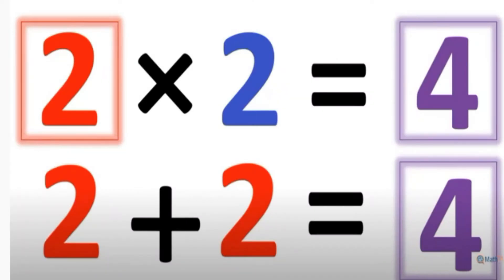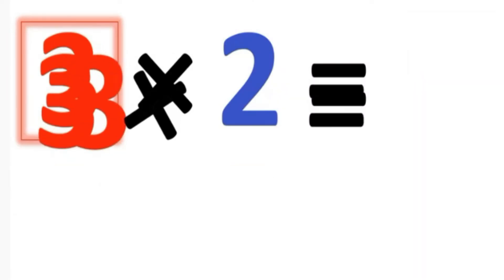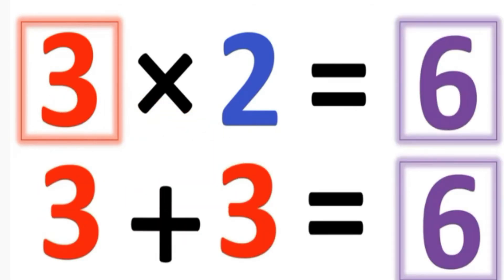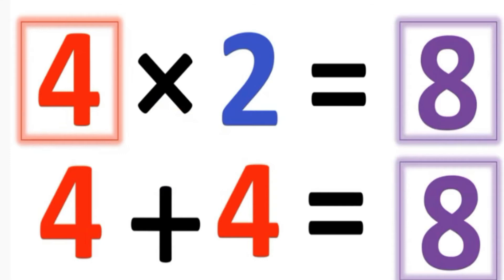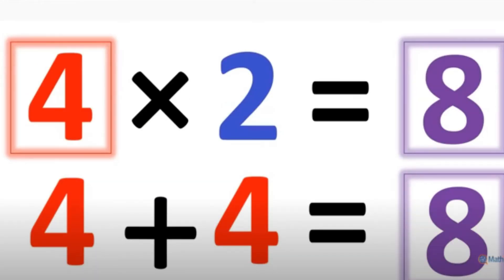Rule number 4. Multiplying by 2. Multiplying anything times by 2, there are two things you can do here. First thing you can do is, you can double the number. 2 times 2 equals 4. Also, you can add these two numbers together. 2 times 2 equals 4, 2 add 2 equals 4. If we take 3 times 2 equals 6. 4 times 2 equals 8, and if we add 4 plus 4 equals 8.